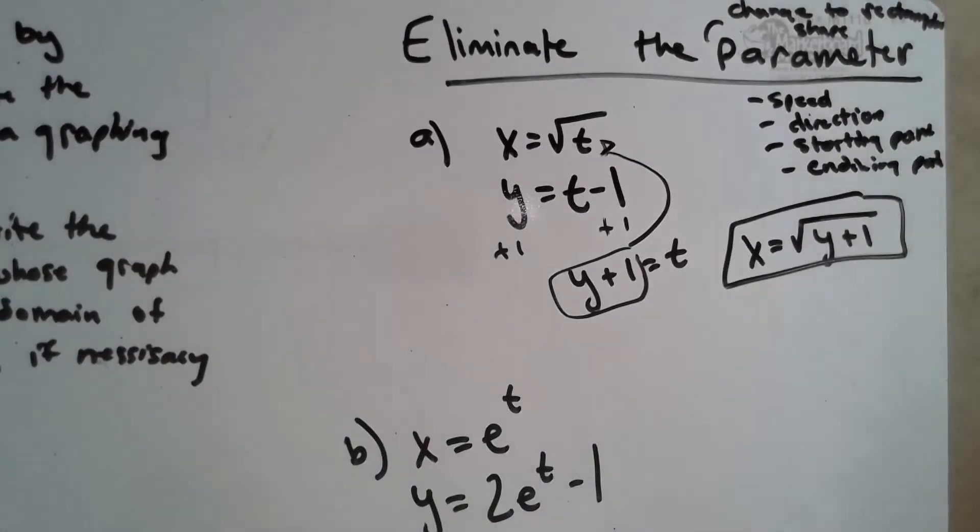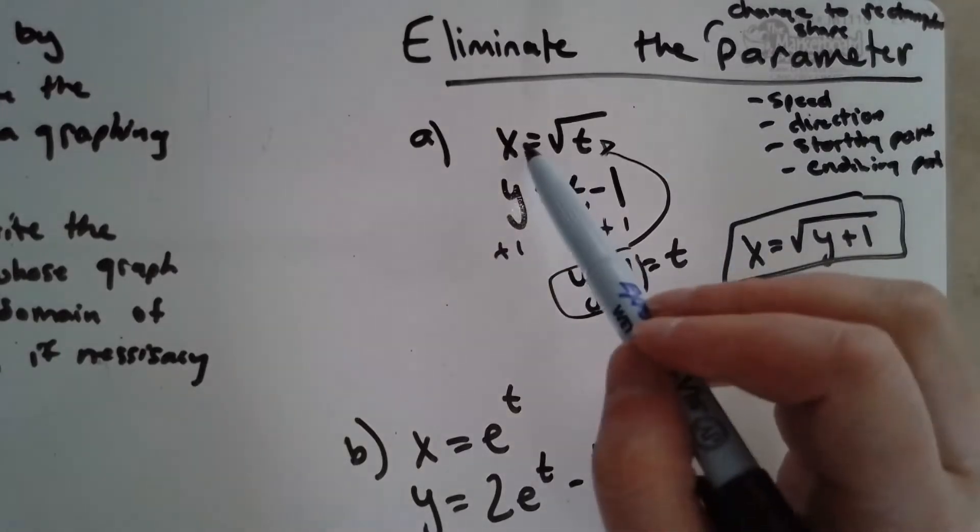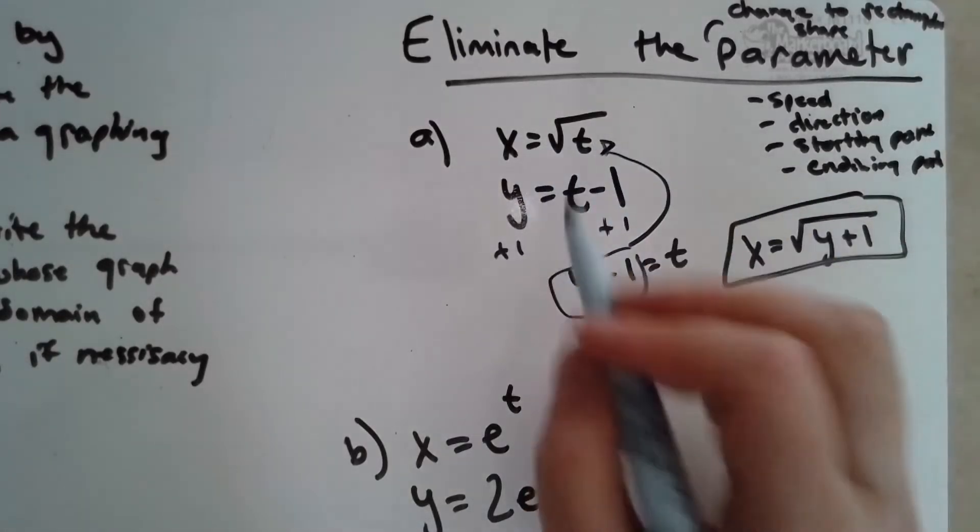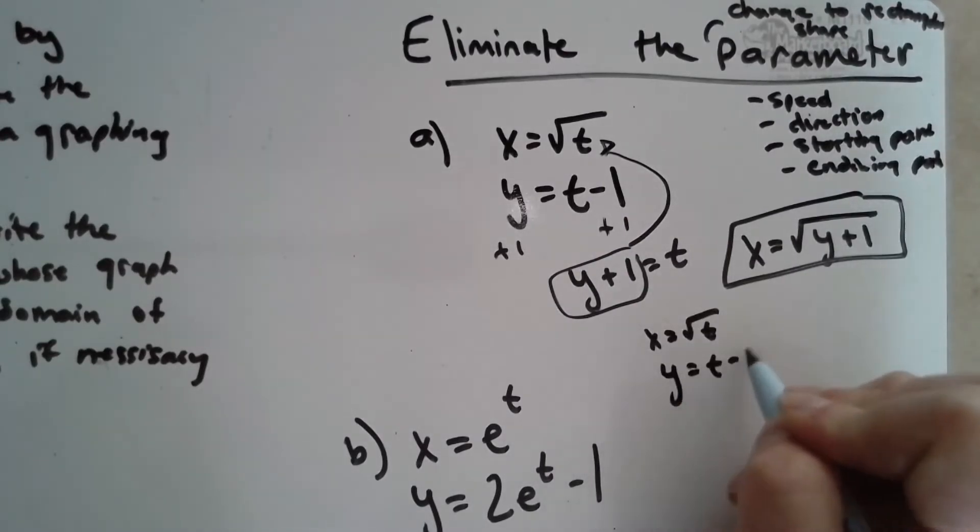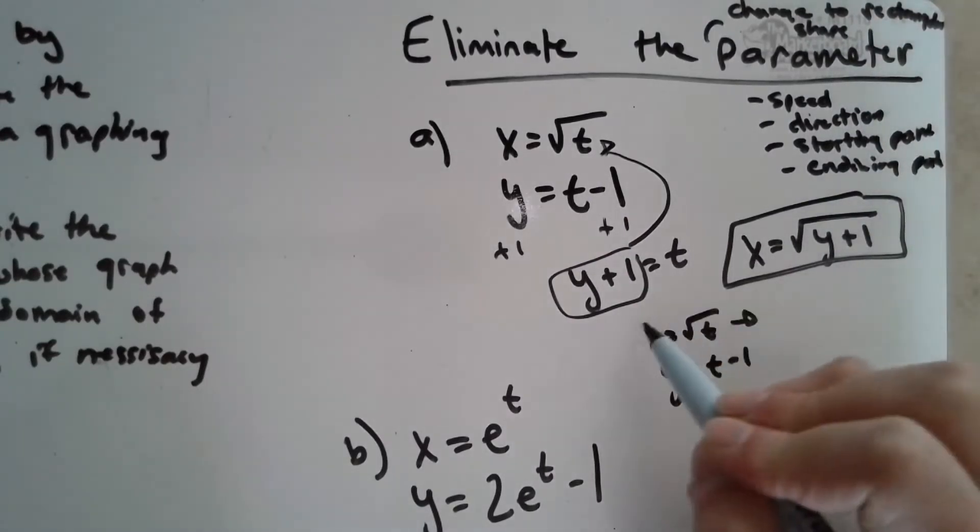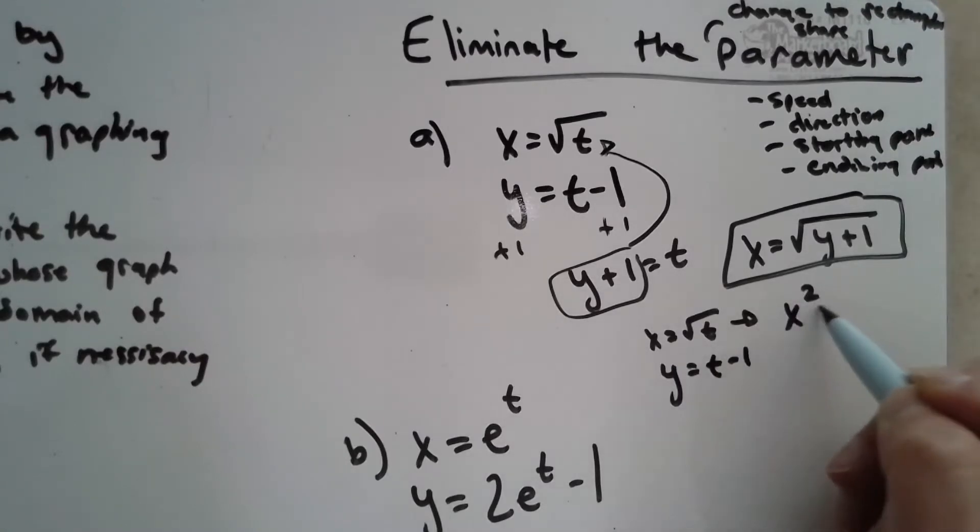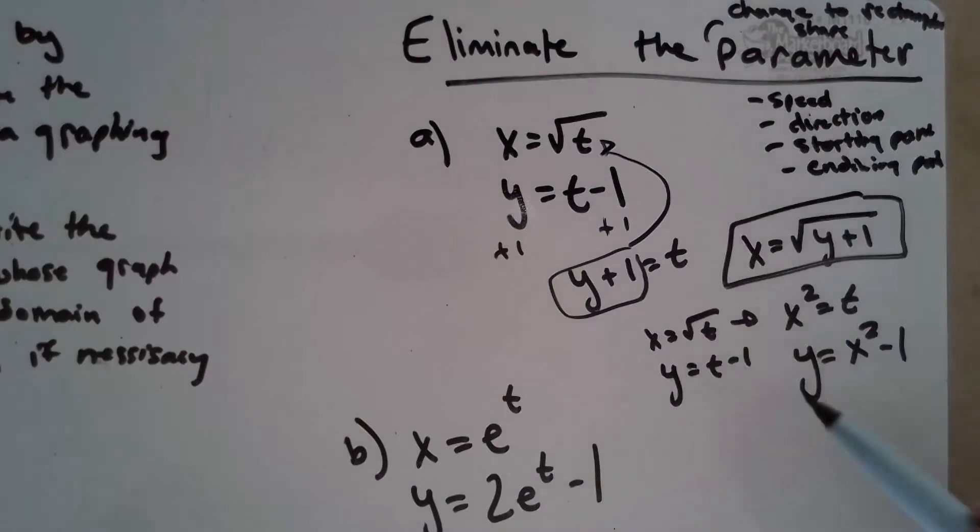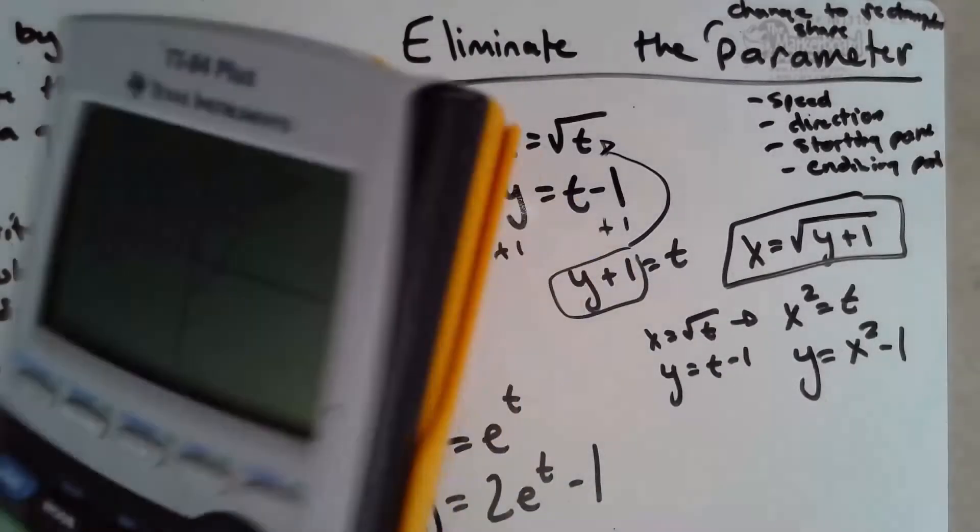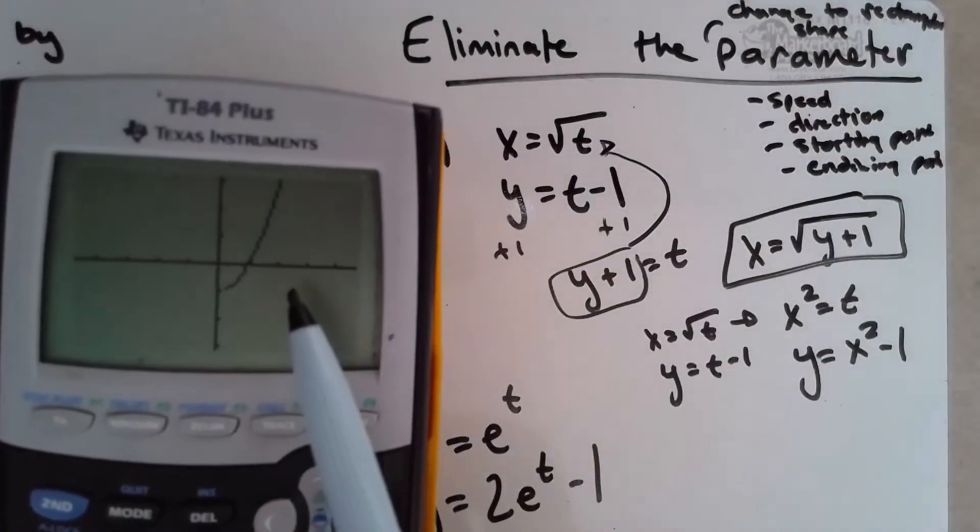Okay, what if I had solved for x equals T squared? So instead of solving the way I did, I could have said okay, if I square both sides, x squared equals T. And then if I substitute this in, y equals x squared minus 1. And from the little piece of the graph we saw—again, my graph isn't set up right because I don't have my domain restrictions or my given range—but if you notice it started down here at negative 1, this is our graph.